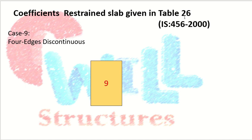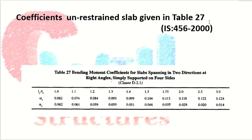These are the types of panels for two-way slabs, and the coefficients for restrained slabs are given in Table 26 of IS 456. For unrestrained slabs, the coefficients are given in Table 27, which also depends on the ratio of longer span to shorter span. We will discuss a worked example of two-way slab design in the next video.